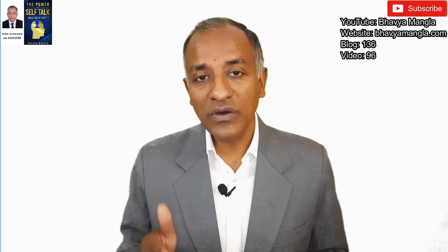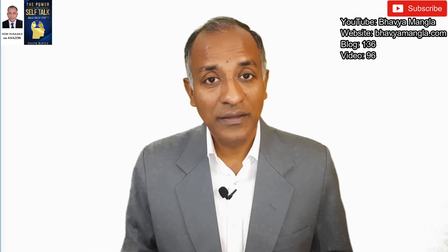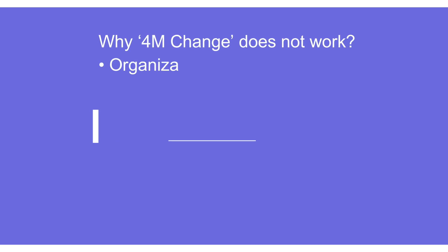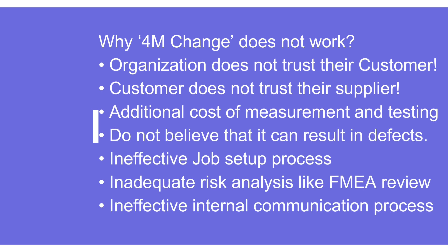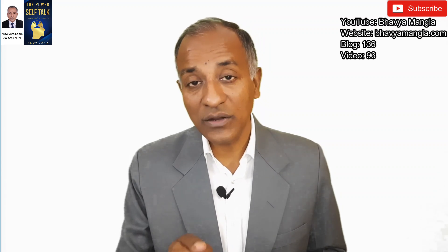Why is 4M change not effectively implemented in practice? There are certain reasons. First, there is very low or no trust between the organization and the customer that anything communicated will actually be accepted. Second, the customer also does not trust the supplier. Third, there are additional costs involved in any 4M change and management may not be willing to bear them. At times the organization does not foresee that a 4M change can result in any defect. In majority of cases, job setup is not done effectively, and risk analysis — especially FMEA — is either not done or is just a paper formality. Internal communication is also not effective, and key stakeholders are unaware of any 4M change.